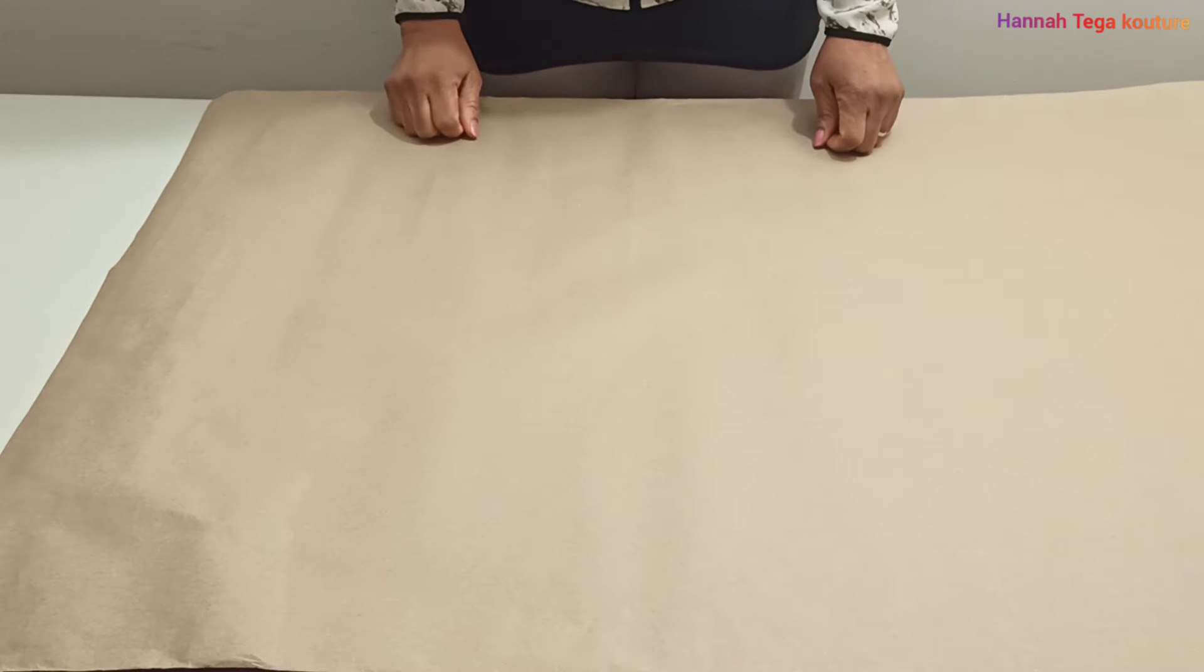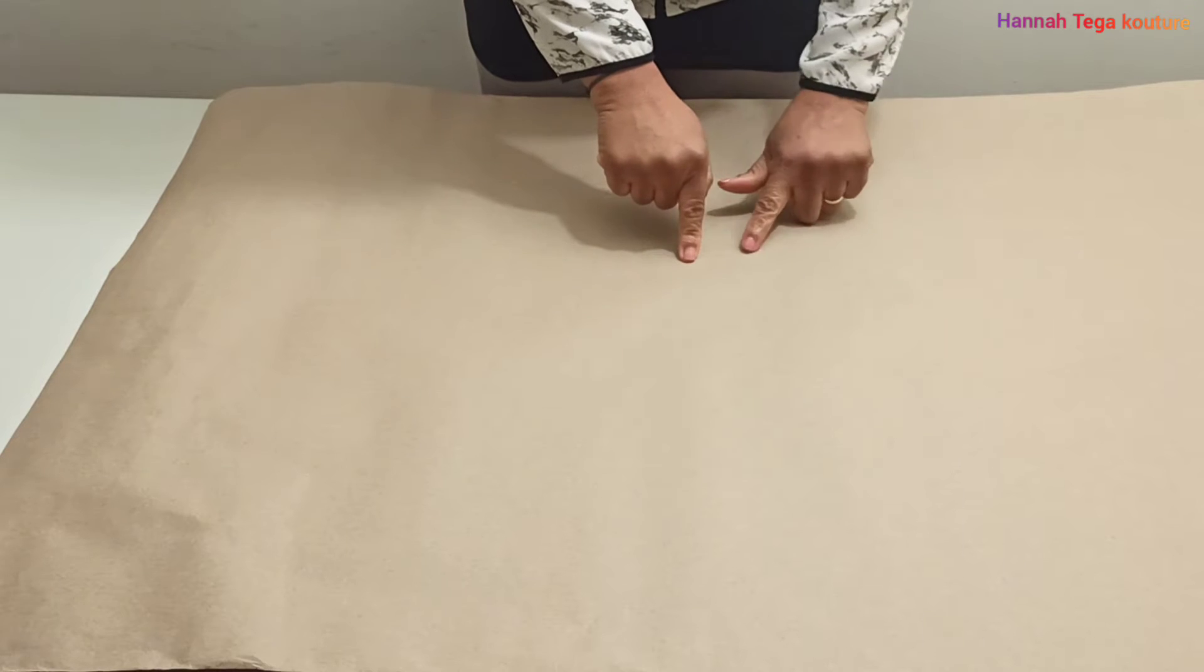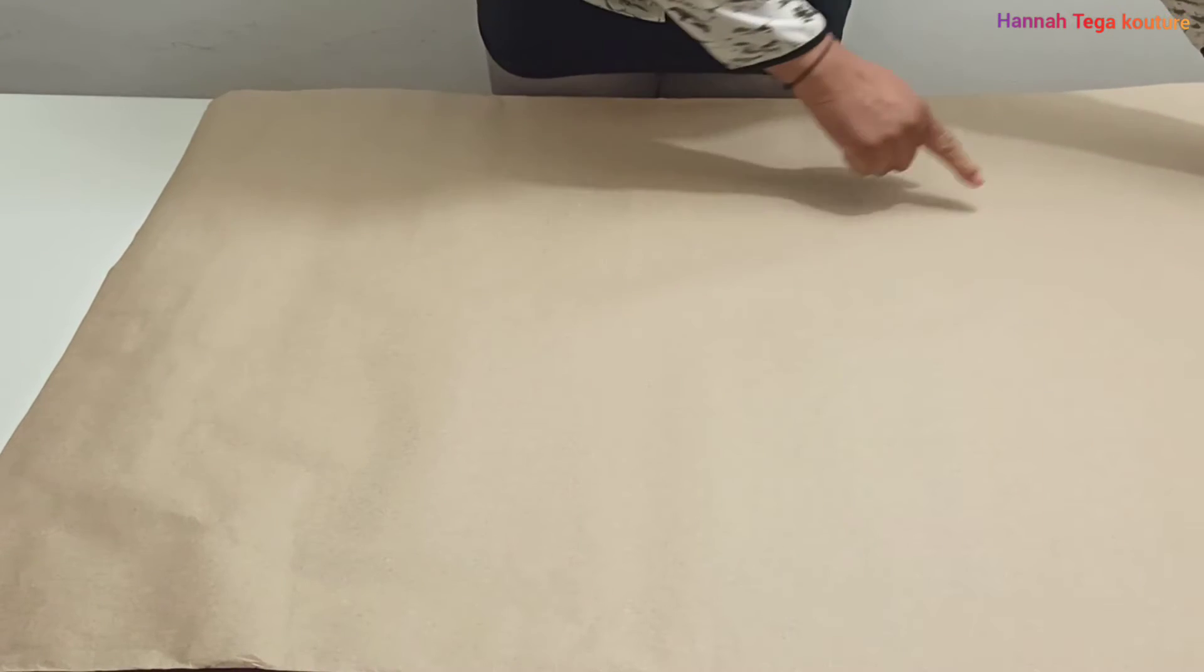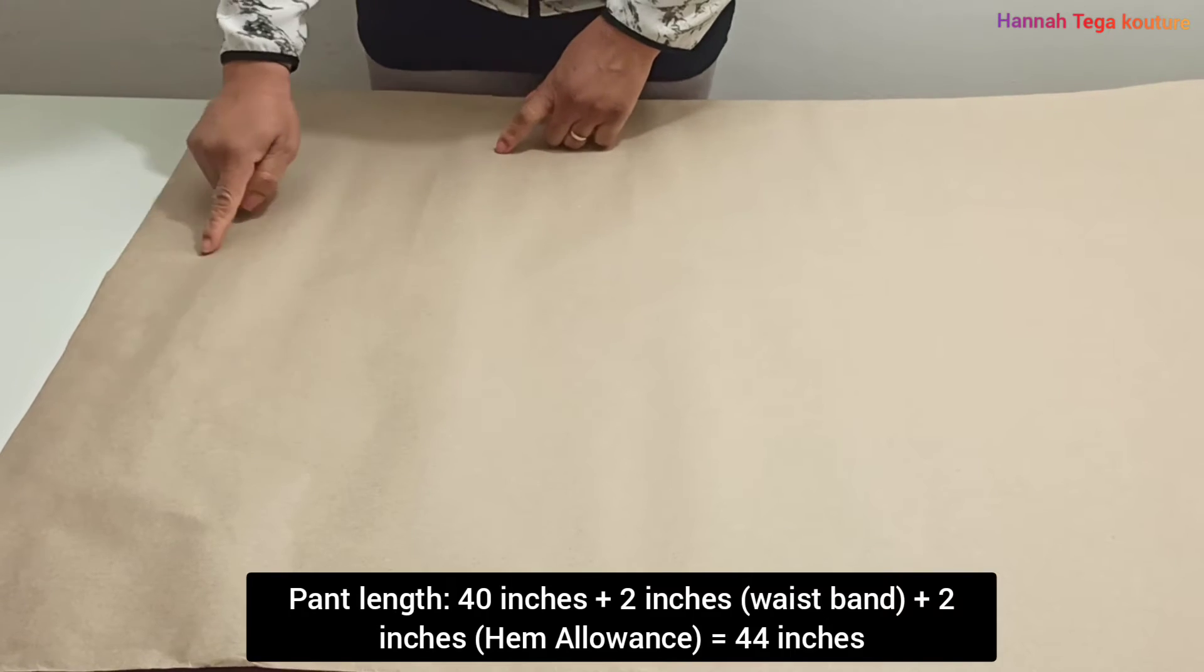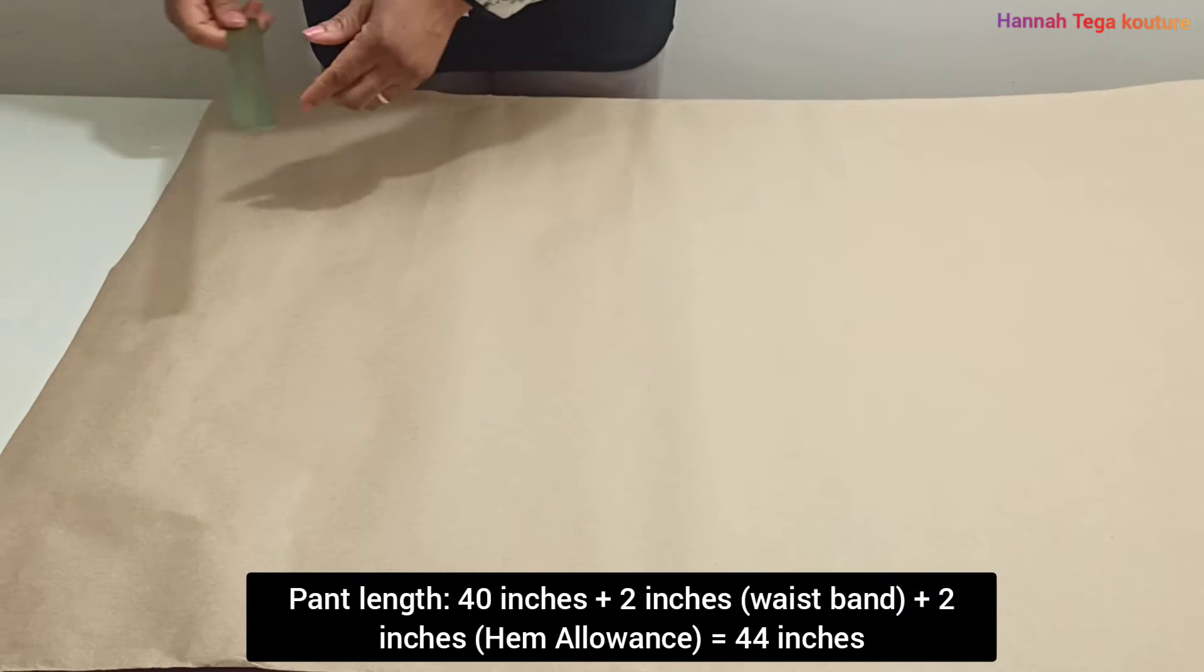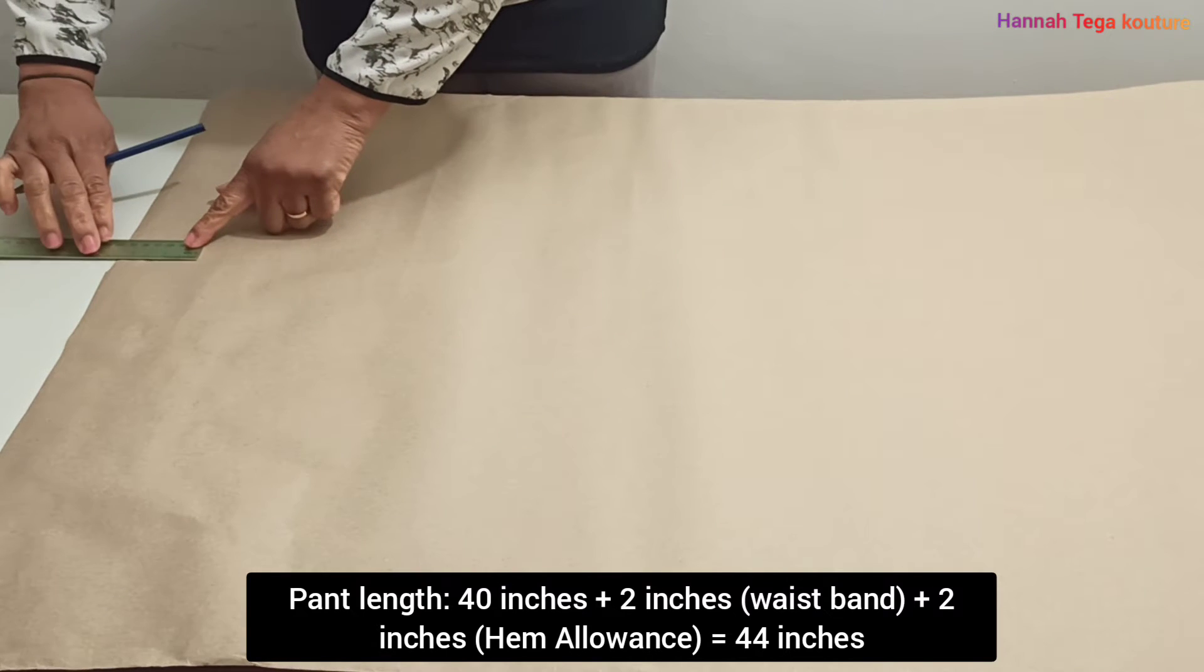If you look at the brown paper I've laid on the table, I've got the entire length of the pant I want to make, so that's 44 inches you're looking at. I'm going to be taking two inches for my waistband and make all the necessary markings.